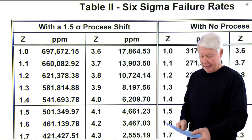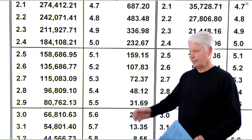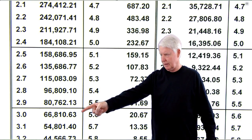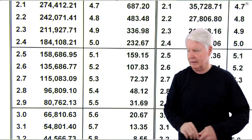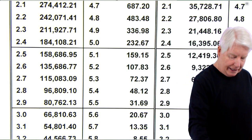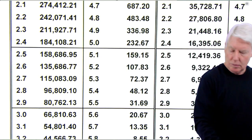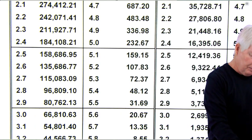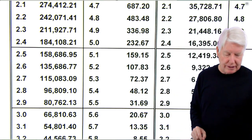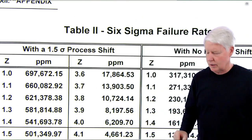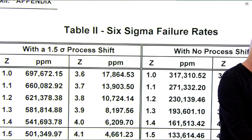This table makes it quicker. Looking at three sigma with the one-and-a-half sigma shift, it gives us 66,810.63 parts per million. For four sigma, the table gives us 6,209.7 parts per million.